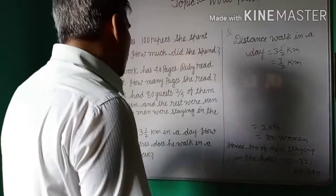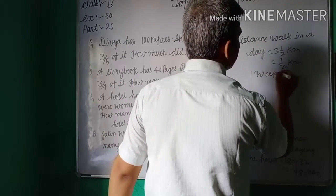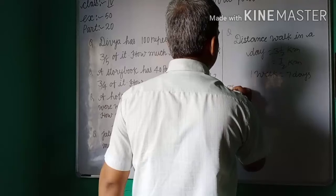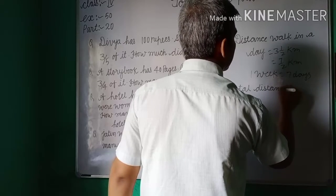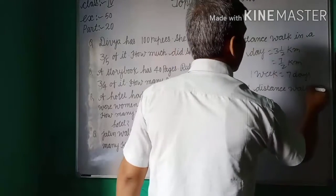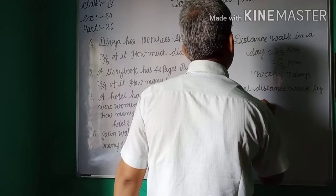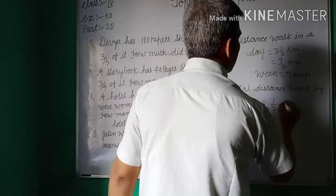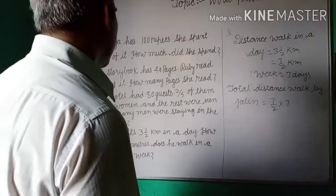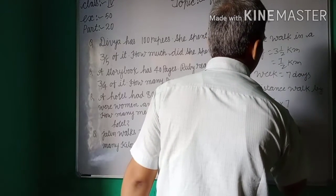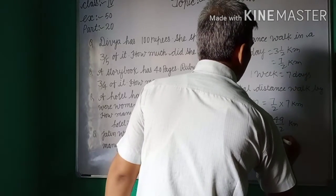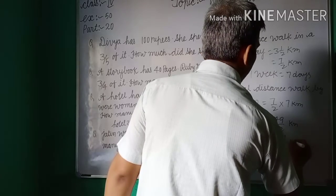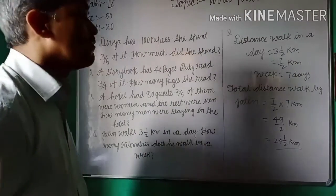A week is equal to 7 days, as you know. So total distance walked by Jatin is equal to 7 by 2 multiplied by 7, which gives 49 by 2 kilometers. That means 24 and 1 by 2 kilometers walked in a week by Jatin.